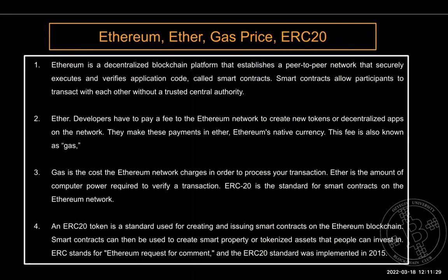Smart contracts are now decentralized. In the past, to get something notarized you went to a notary in person. Now smart contracts let you do it digitally — securely, decentralized, transparently, and without a notary. That's why it's called disruptive. ETH is the coin of Ethereum — every layer one protocol has a coin. When a developer deploys a smart contract, they pay a fee to the Ethereum network. That fee is called gas or gas price, paid in ETH.